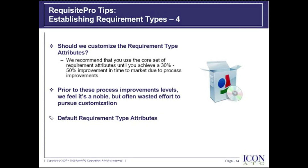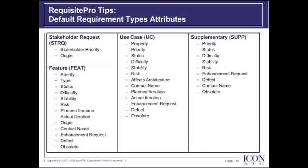Should we customize the requirement type attributes? We recommend that you use the core set of requirement attributes until you achieve a 30 to 50% improvement in time to market due to process improvements. Prior to reaching these improvement levels, we feel it's a noble but often wasteful effort to pursue customization. The core set of requirement attributes will be provided on the next page so you can see how comprehensive they actually are out of the box. Here we have the default requirement type attributes — you should see that the defaults provided by ReqPro are rather comprehensive.